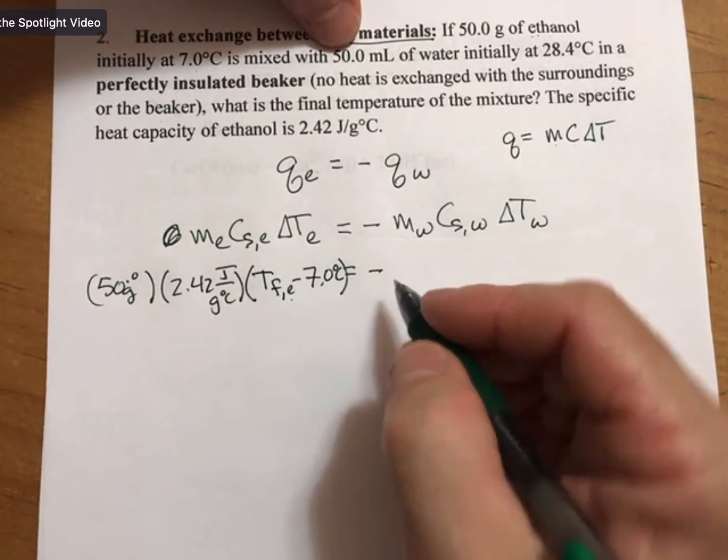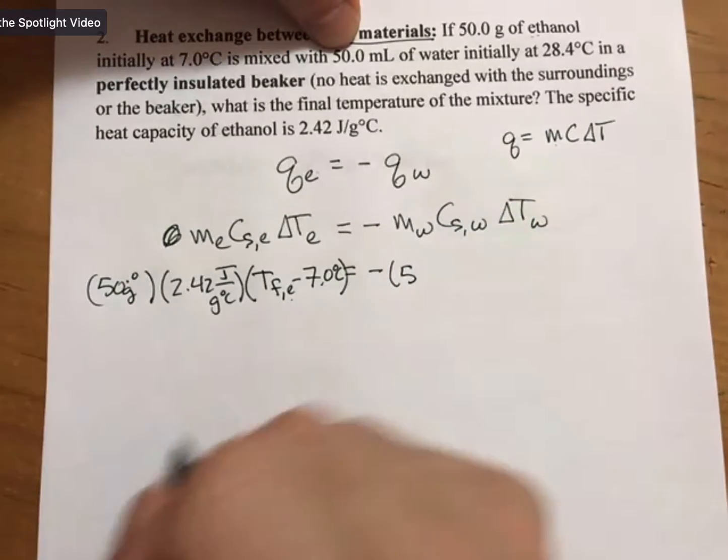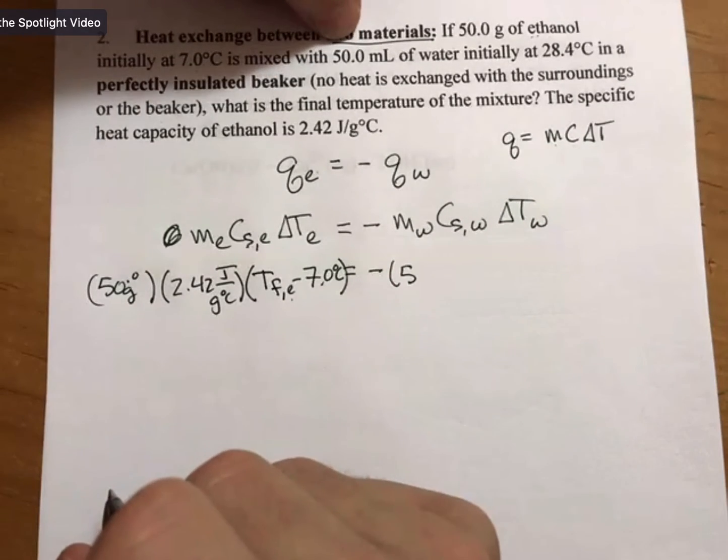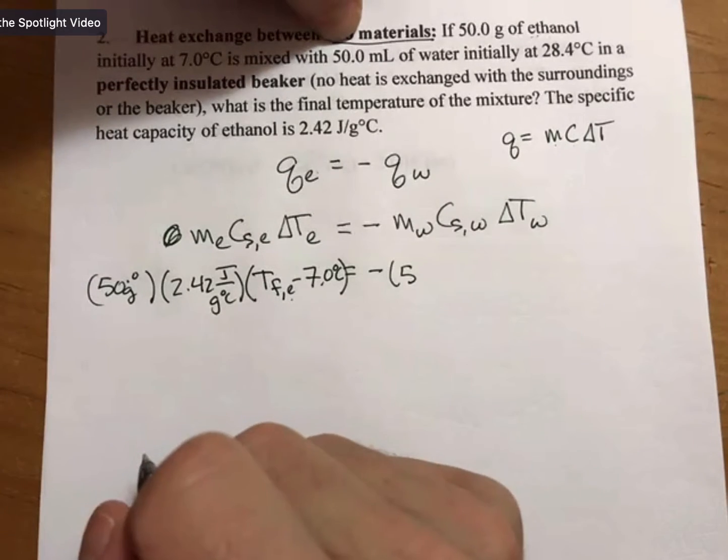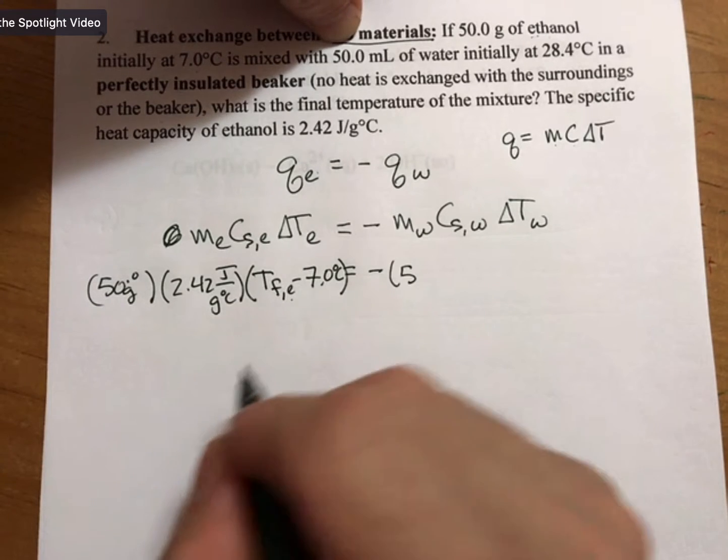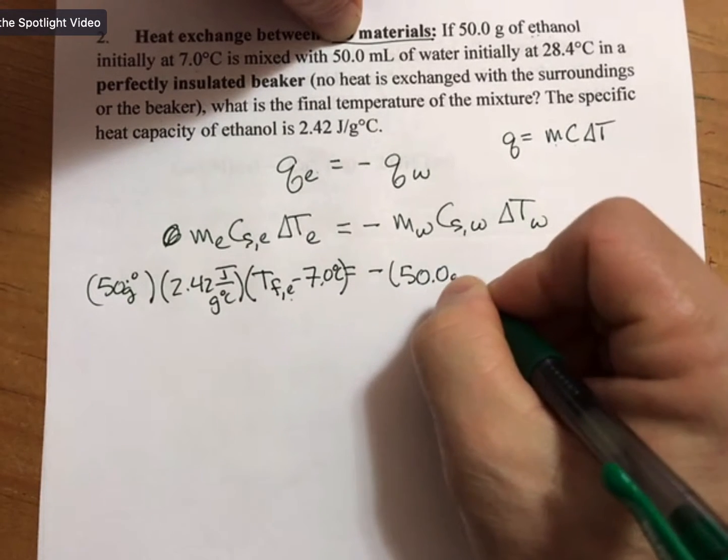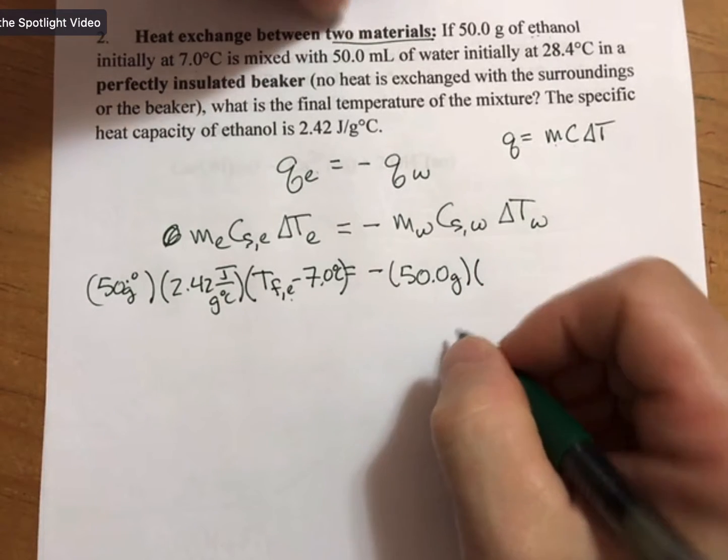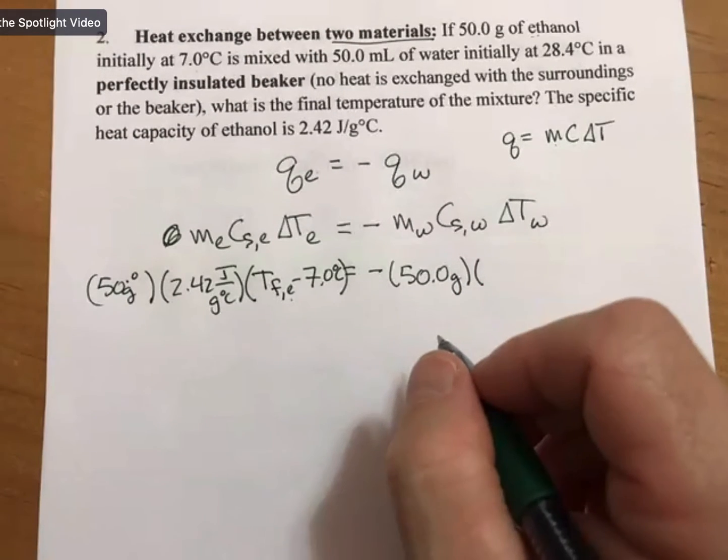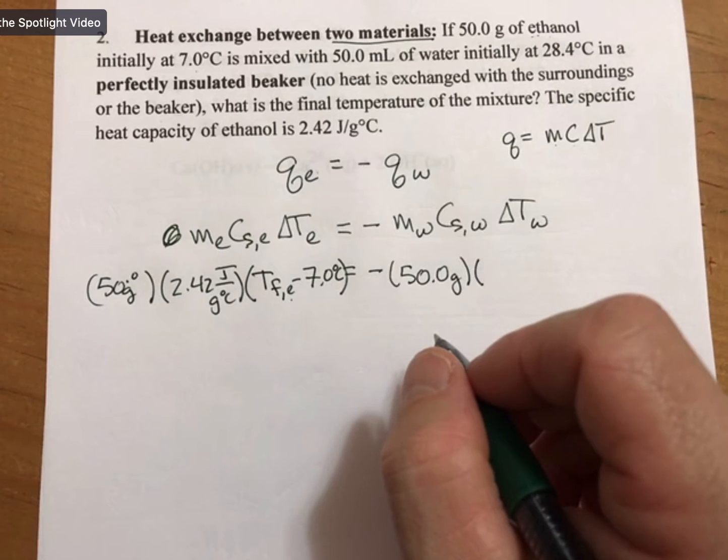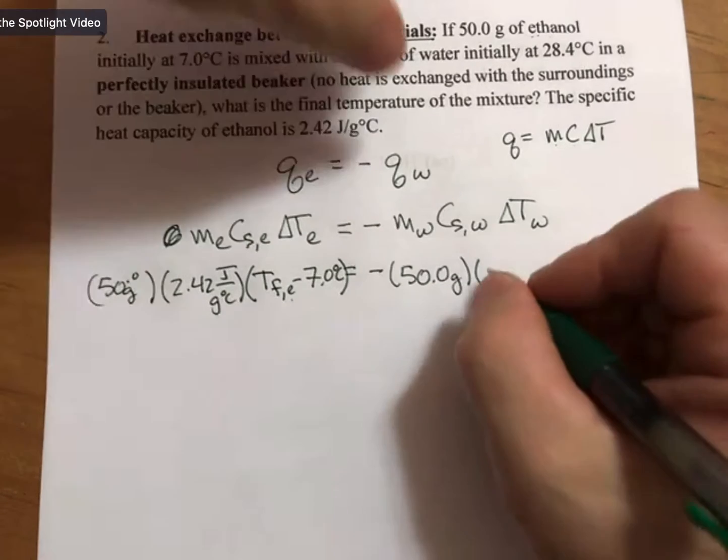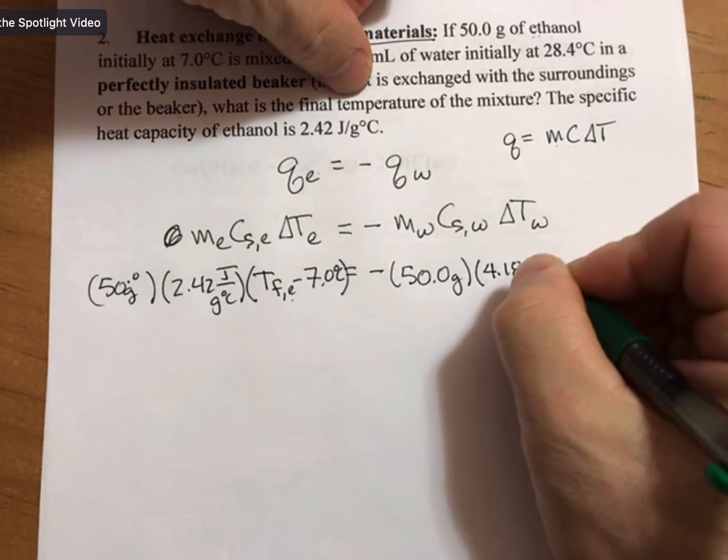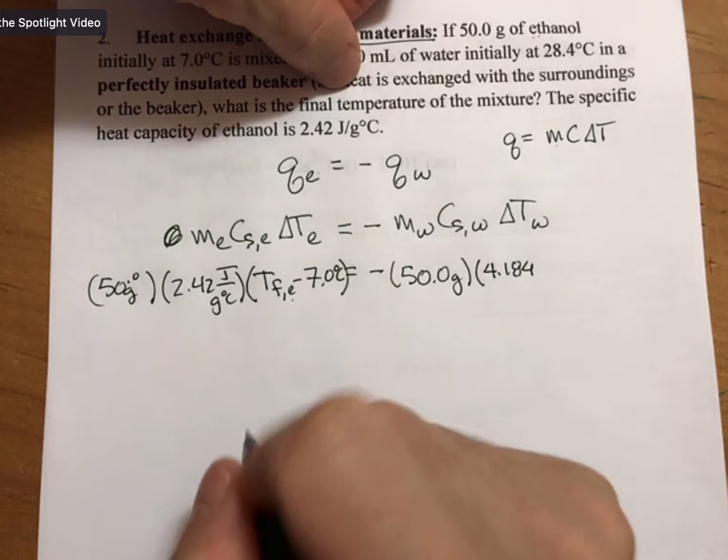Now we have the mass of the water. Well, we have the milliliters of water. One thing that we've seen a couple times before is that milliliters of water are equal to grams of water. We have used the specific heat capacity of water before. If we don't remember it, it is 4.184 joules per gram degree Celsius.